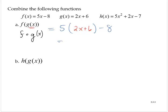That gives us 10x plus 30 minus 8, using the distributive property. So that's 10x plus 22, and that would be f of g of x.